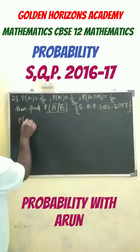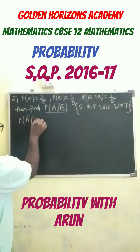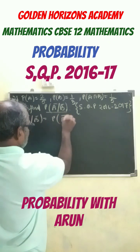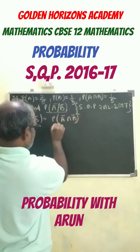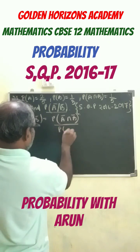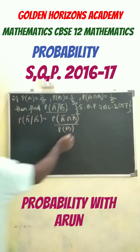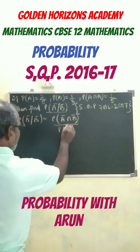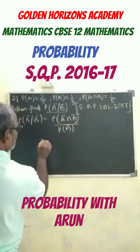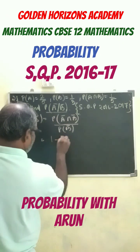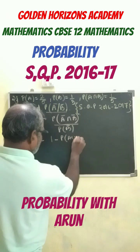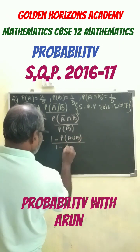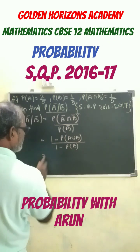First, we write out the probability expression — that is, the probability of B given A — which is equal to the corresponding expression.